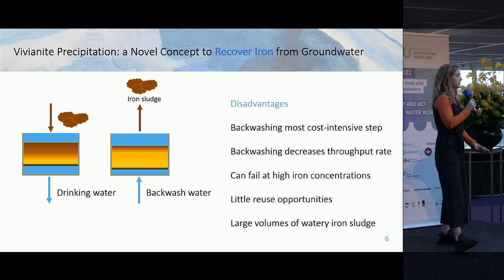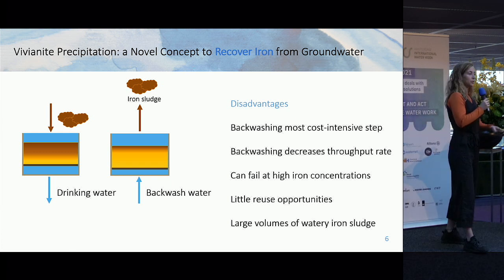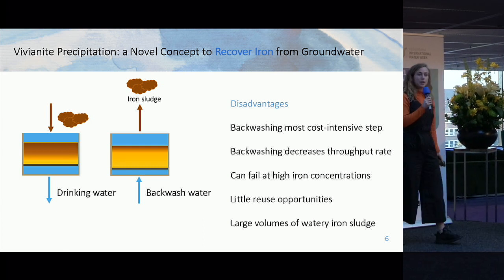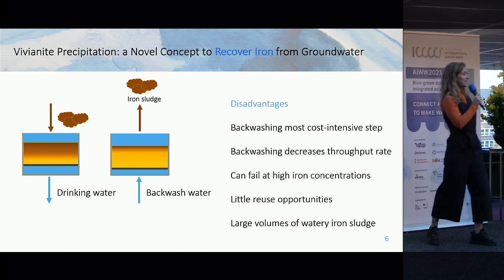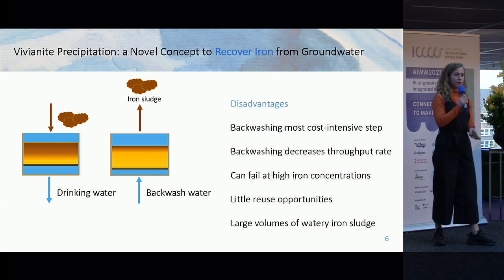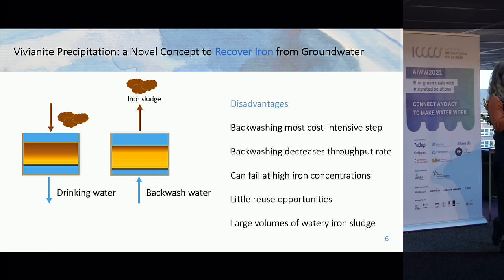The filter bed should be backwashed periodically to remove the iron flocs, and then you obtain the iron sludge. Although this method is used everywhere around the world, there are some disadvantages: backwashing is a very cost-intensive step, the process must be stopped temporarily which decreases the throughput rate. This technique can also fail at high iron concentrations, and there are little to no reuse opportunities for the sludge produced.